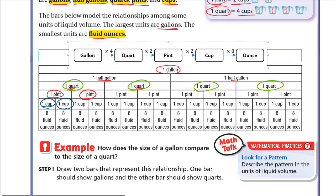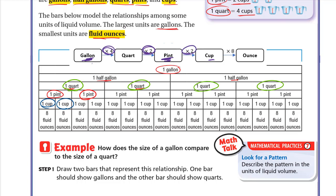For example, from gallon to pint, multiply by four and then by two — that's the same as multiplying by eight. So one gallon is eight pints. From gallon to cup, multiply four by two by two, which is sixteen. So one gallon equals sixteen cups.